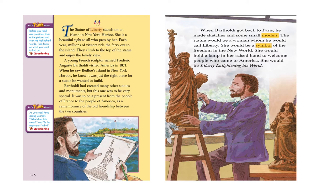A young French sculptor named Frederick Auguste Bartholdi visited America in 1871. When he saw Bedloe's Island in New York Harbor, he knew it was just the right place for the statue he wanted to build. When he visited it in 1871, he knew this was the right place. He had created many statues and monuments, but the Statue of Liberty was the greatest of them.